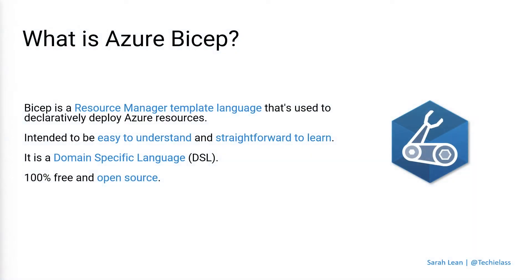Looking at the very basics of what Azure Bicep is, it is a tool or a language that can be used to deploy your Azure resources. Azure Bicep builds on some existing tool sets — the resource manager template language that we already use within Azure — but it aims to be a lot easier and more straightforward to learn than Azure ARM templates have been in the past, which has been one of the biggest bugbears from end users and the community.